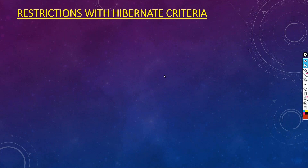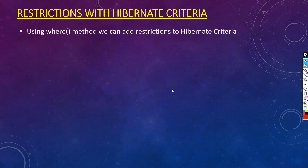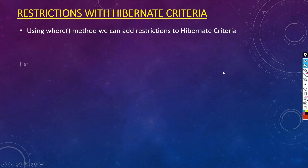We want to filter records based on some conditions — these conditions are called restrictions. How to go with these restrictions in Criteria API: using the where method, we can add restrictions to Hibernate Criteria.